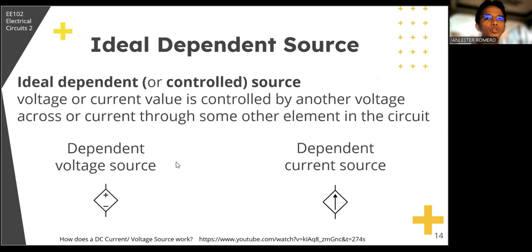Now for the ideal dependent source. On the contrary, the voltage or current value of an ideal dependent source is controlled by another voltage across or current through some other element in the figure. Dependent voltage source, this is the symbol. Dependent current source. You'll notice they're similar. For voltage, there's polarity, for current, there's an arrow. But what distinguishes independent from dependent, for independent it's a circle, for dependent, it's a diamond. And another thing to note is, these sources are dependent, so the value of the voltage across or current, from other elements, then you can control them. That's why it's also called controlled sources.